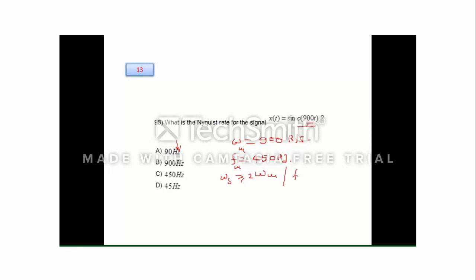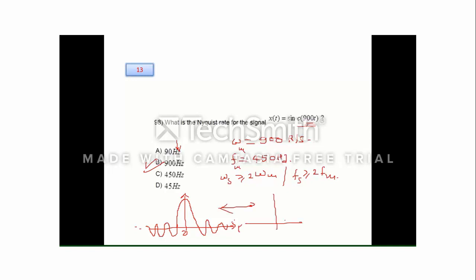Question number 13: x(t) = sinc(900t); find the Nyquist rate. For this signal, ω = 900 radians per second. The sinc function has a rectangular Fourier transform (gate function), giving a maximum frequency fm = 450 Hz. By the Nyquist theorem, fs ≥ 2·fm, so the sampling frequency is 900 Hz, which is option B.